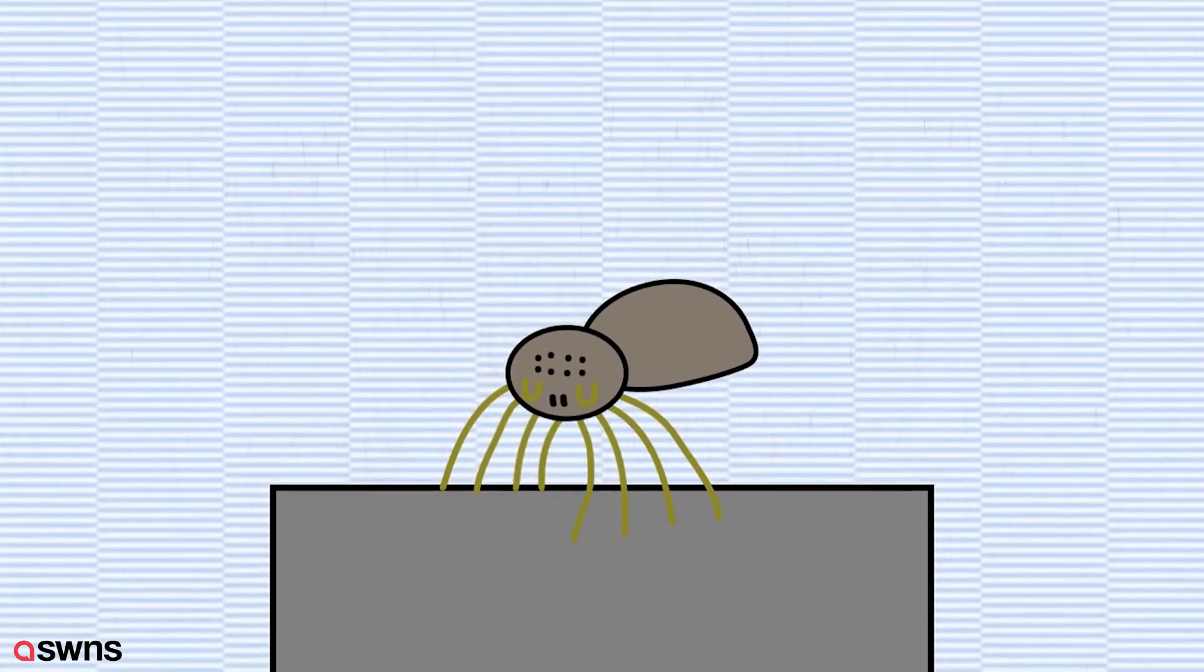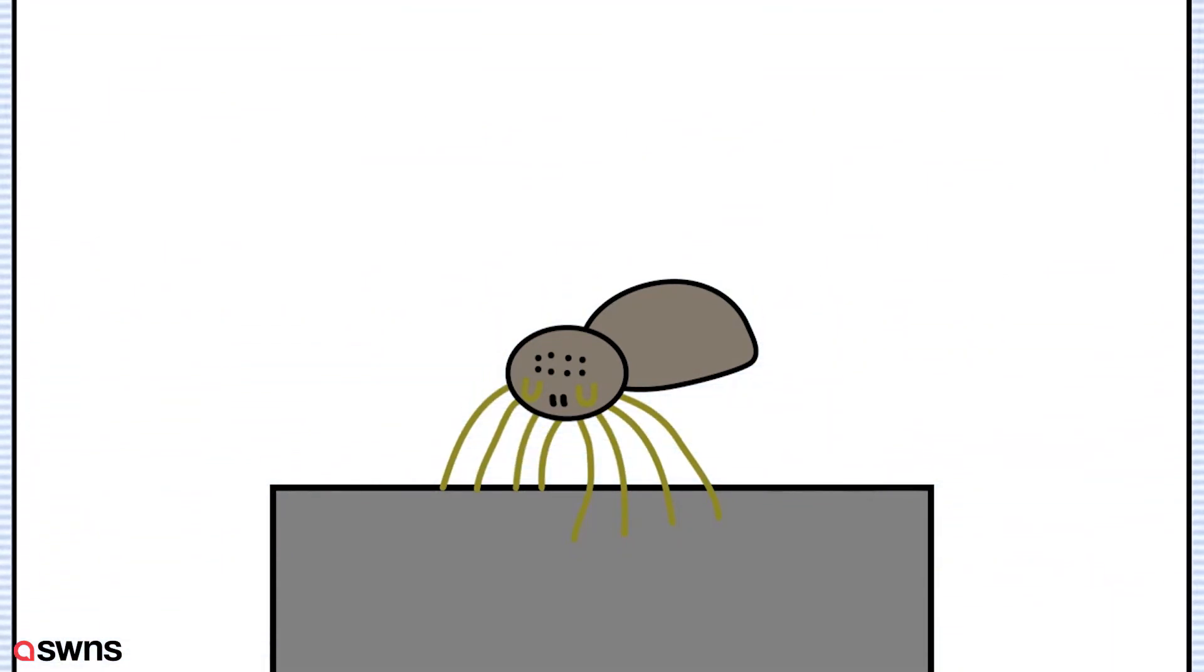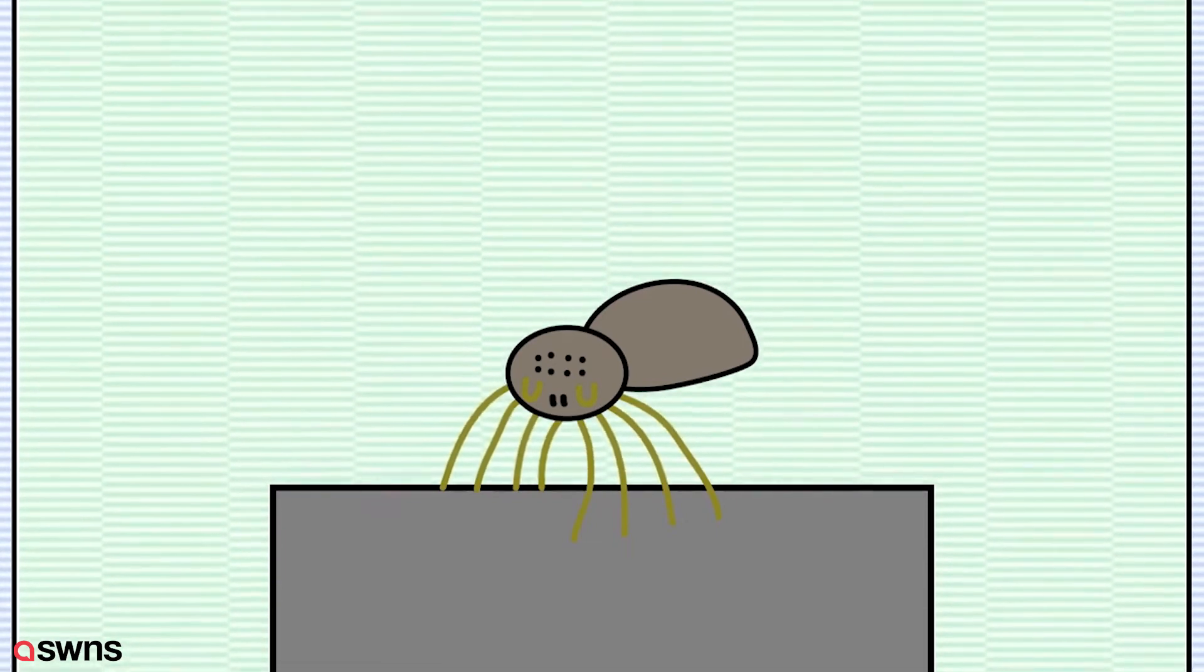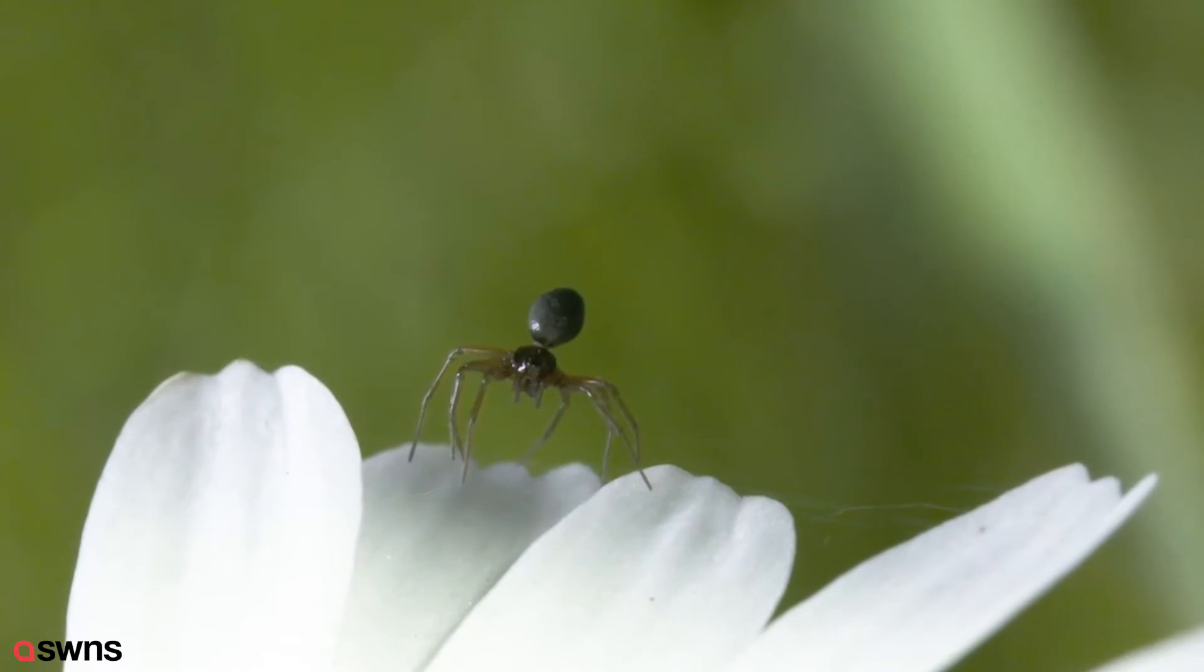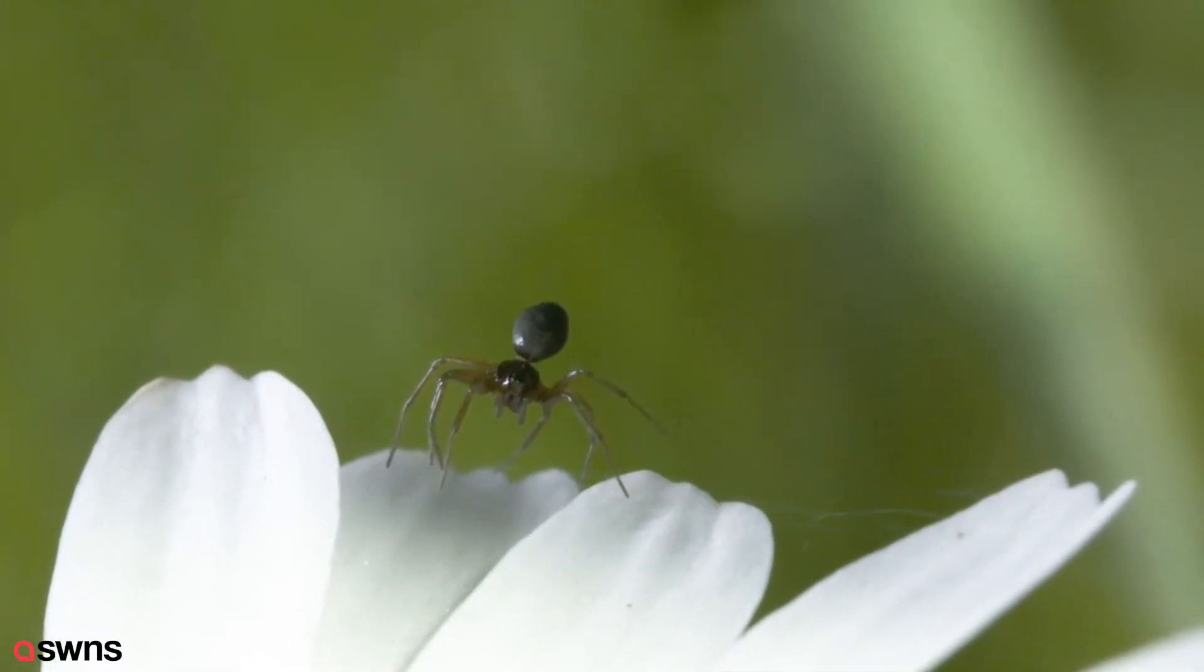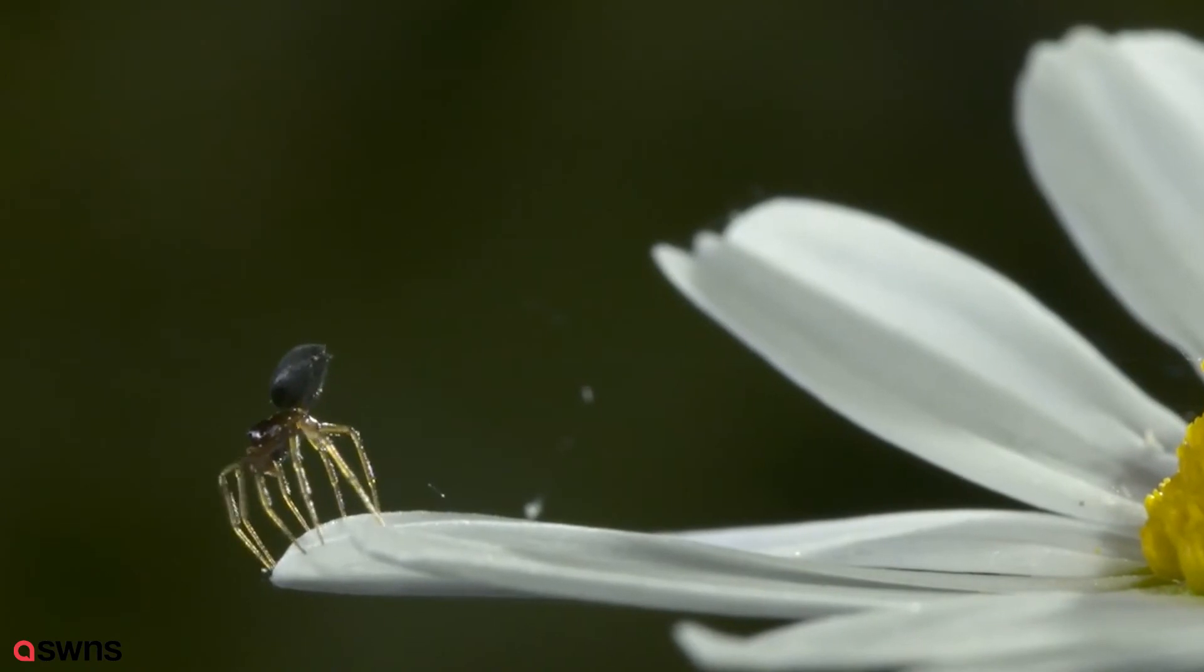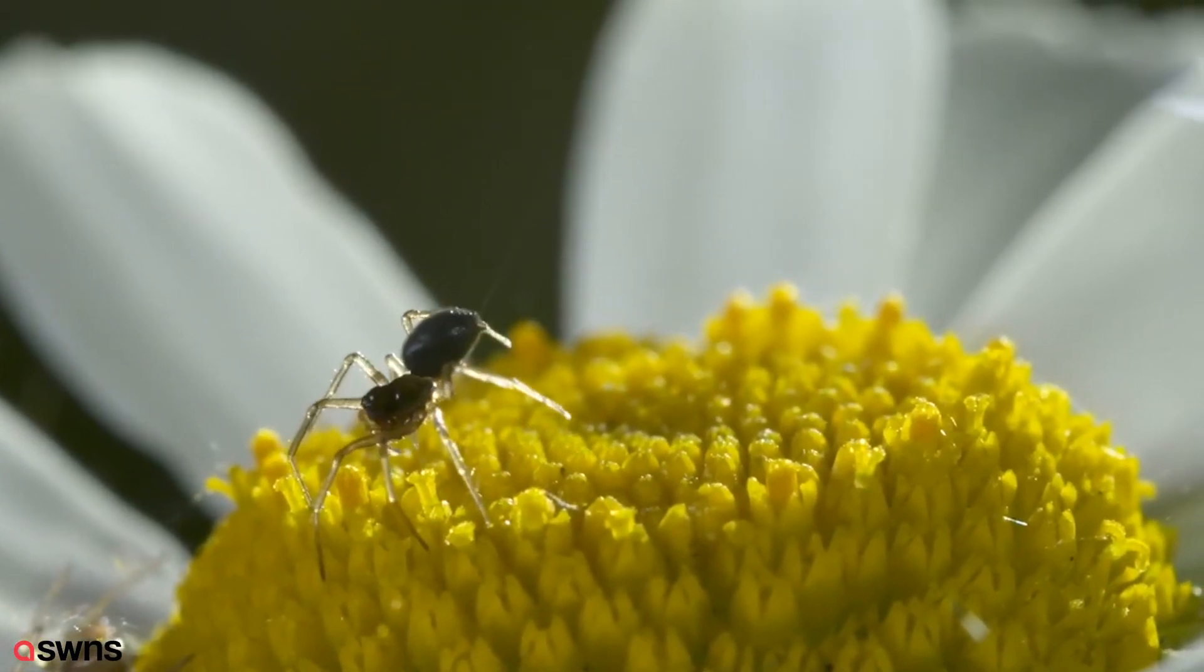In our lab at the University of Bristol we isolated spiders from any airflow or atmospheric electricity and generated our own controlled electric field at levels found in nature. In response the spiders began to change their behavior to perform tiptoeing where they straighten their legs, raise their abdomen and release silk. This behavior is only ever seen when a spider wants to balloon.